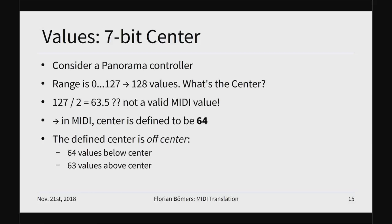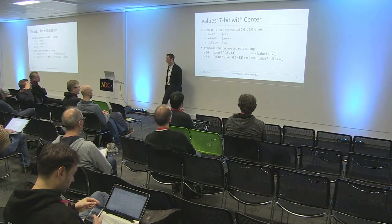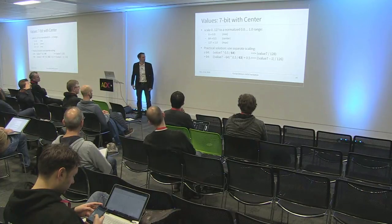A long time ago the MIDI association said okay, we just define the center value to be 64. So this is off-center but whoever receives a value of 64 knows — if it's a panorama controller for example — okay, that's the center. But it also means we have a slightly better resolution for the left side than for the right side. For translating that to a normalized range we need to take a little bit more care of this center problem. Below 64 you just divide by 128, and above 64 you divide by 126 and first you need to deduct one. That gives what some people in the MMA call the 'bent stick curve,' and you have the benefit of a true center also in your normalized range.